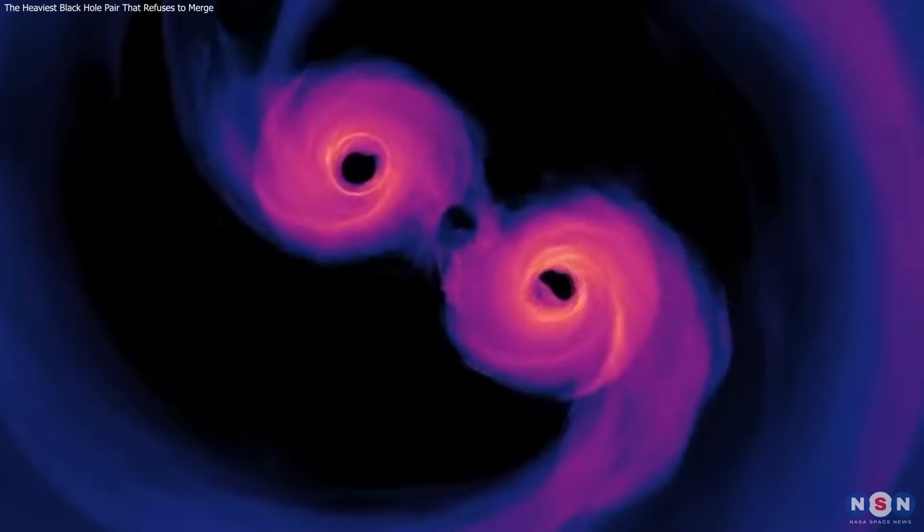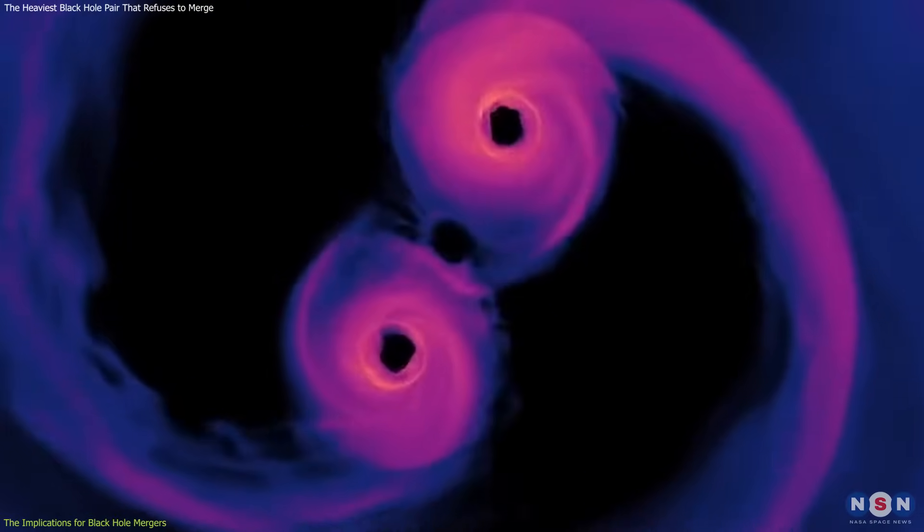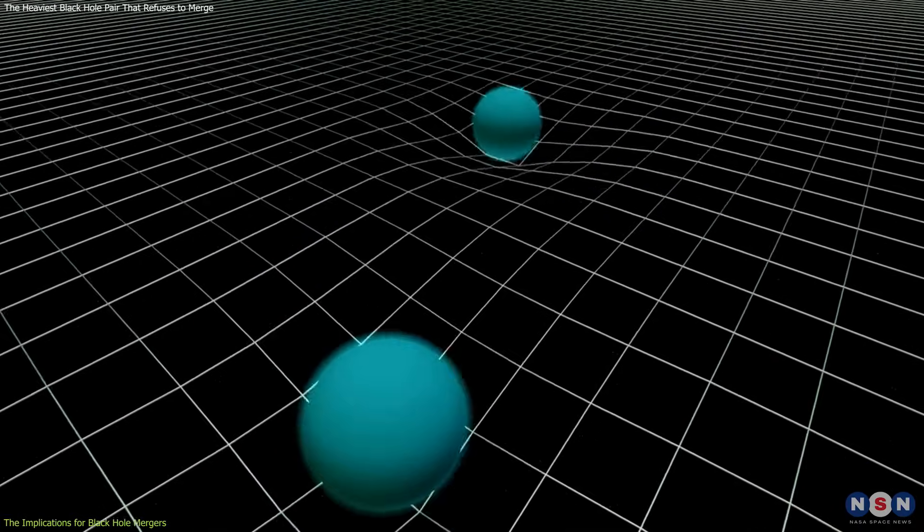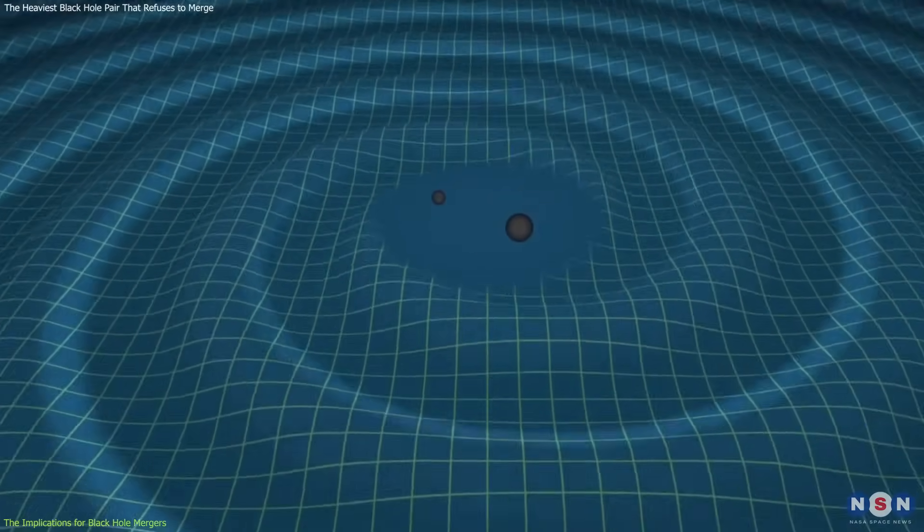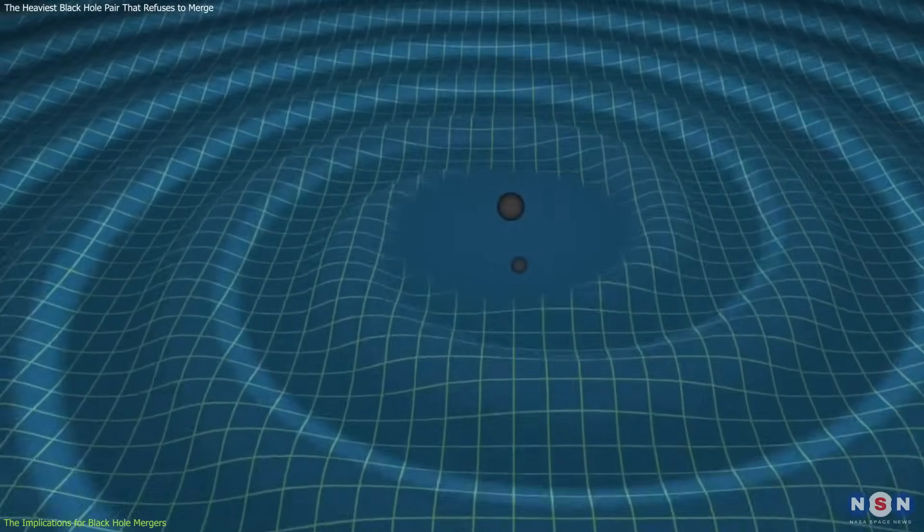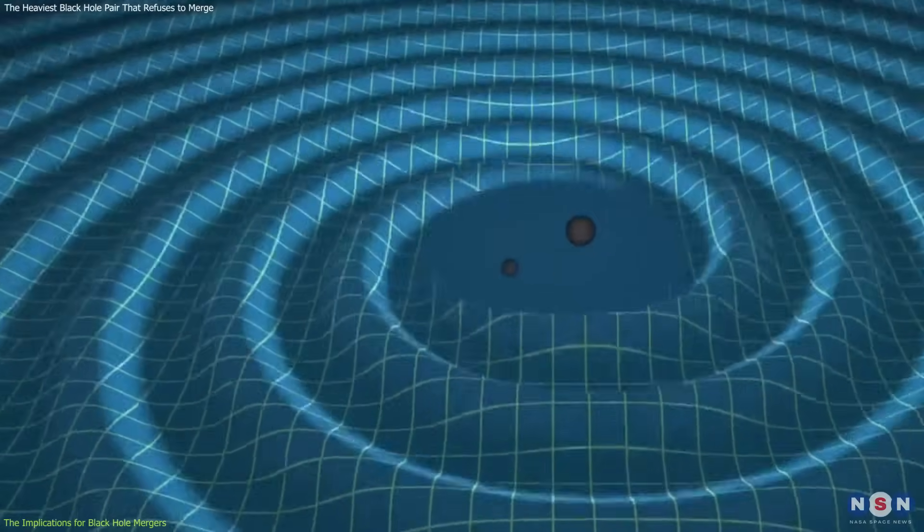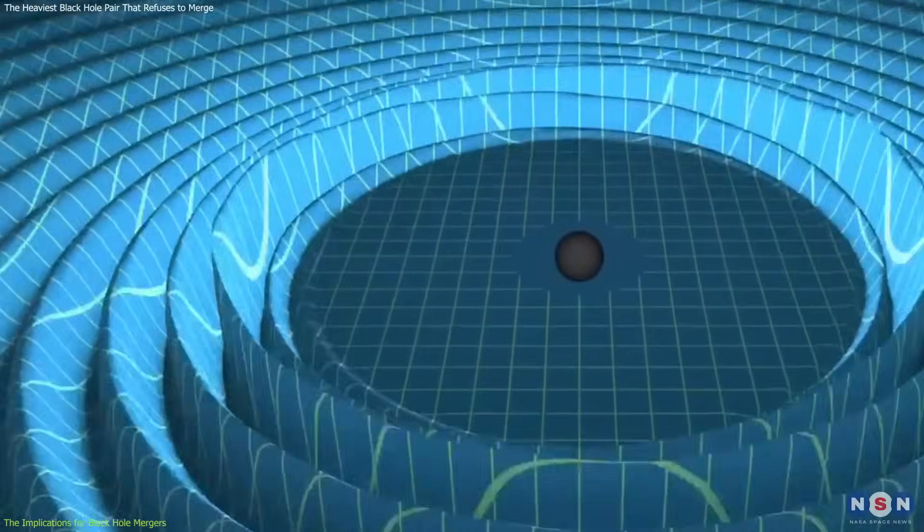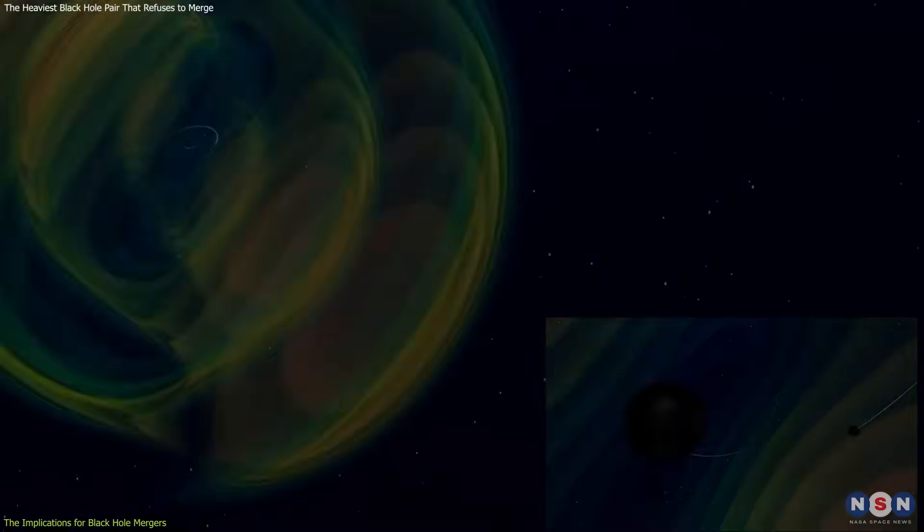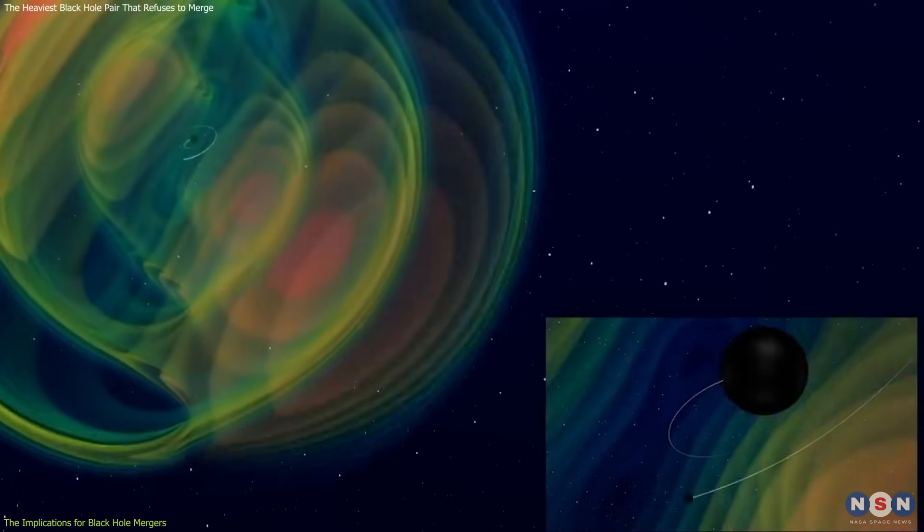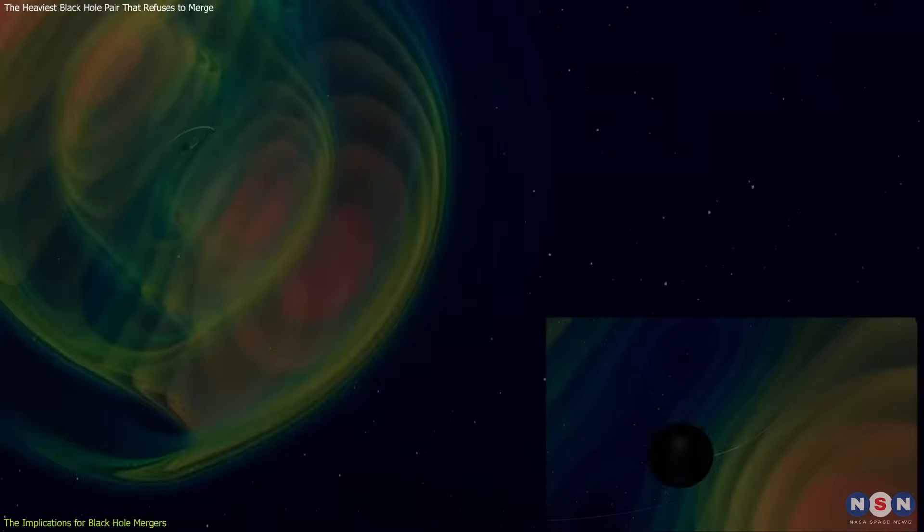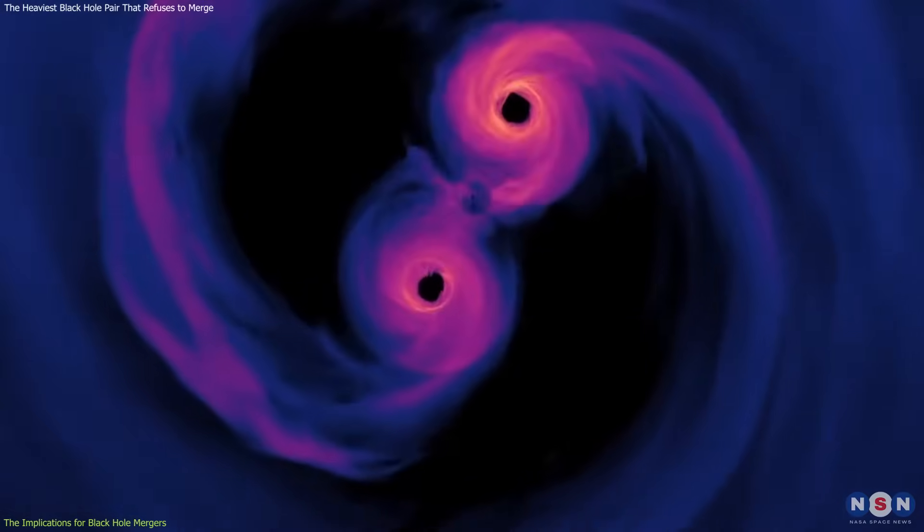Supermassive black hole mergers are predicted by the theory of general relativity, which describes how gravity affects space and time. When two black holes merge, they produce powerful gravitational waves - ripples in the fabric of spacetime that travel across the universe. These waves carry information about the mass, spin, and location of the merging black holes, and can be detected by instruments on Earth, such as the Laser Interferometer Gravitational Wave Observatory, or LIGO.